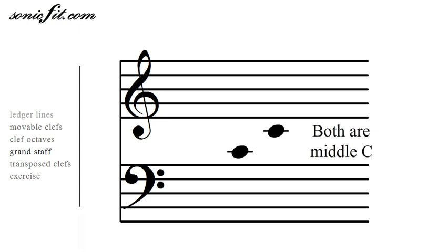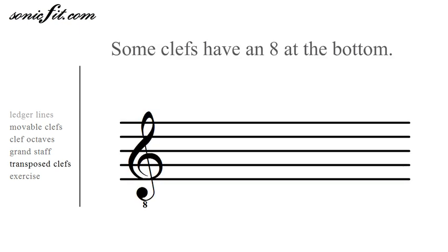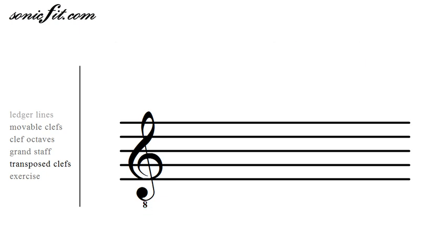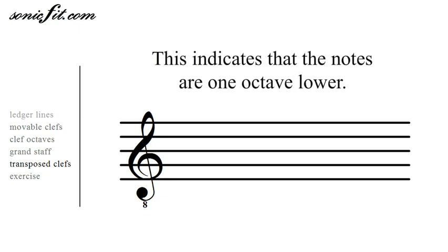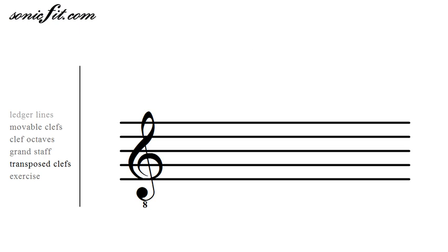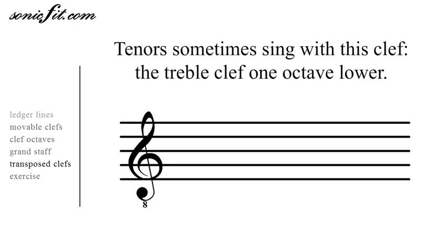The last item to cover in this lesson is transposed clefs. Some clefs have a little 8 at the bottom, which indicates that the notes are one octave lower. Tenors often sing using this clef — the treble clef one octave lower. So they read it just like the ladies read it, but since they're guys, their notes are an octave lower than the ladies.